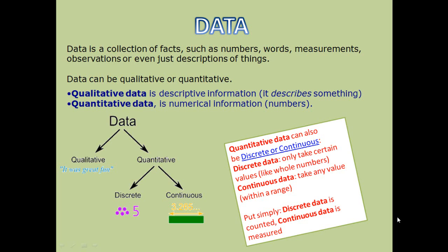Quantitative data can be divided into two parts: discrete or continuous. Discrete is when you present your numerical figures in the form of whole numbers. Continuous is when you take any value within a range — for example, 3.265, which is between 3 and 4.